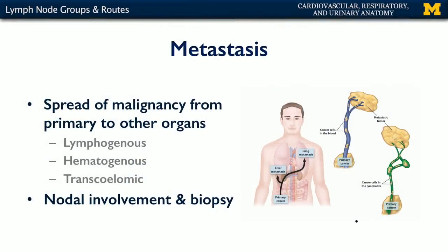Malignancy may also spread hematogenously or via the blood, and this is the case for most sarcomas, which are malignancies of connective tissues, and also renal carcinomas.